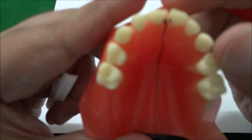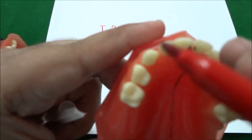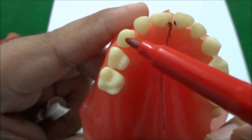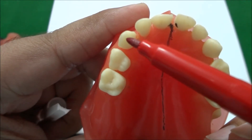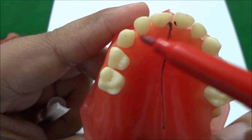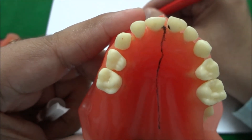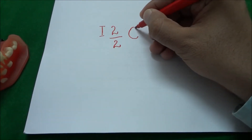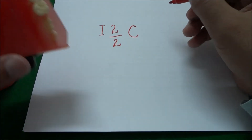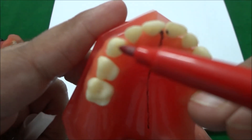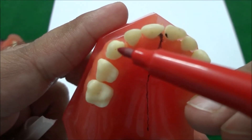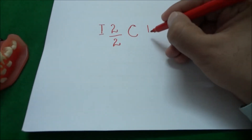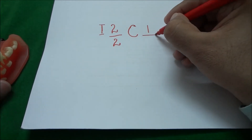Next to the central incisor in the maxillary arch we have a canine. This dot is the maxillary canine. For the canine we will write C, and in each maxillary quadrant we have one canine, so we will write C1.